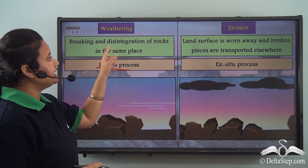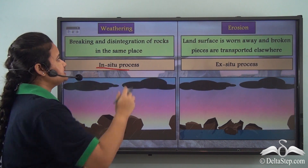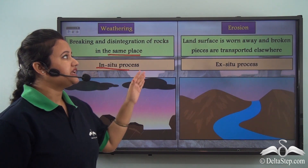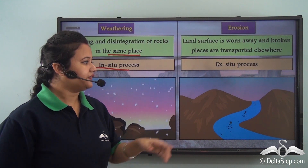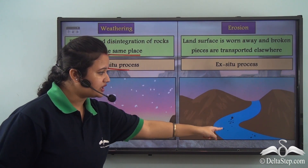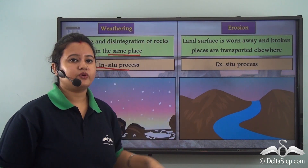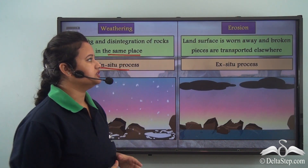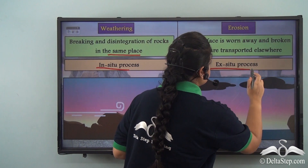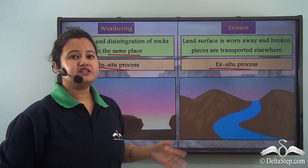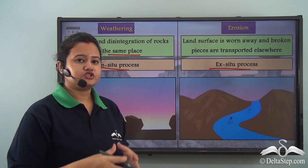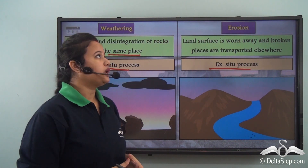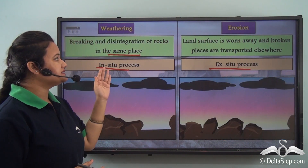In weathering, the breaking down of rocks takes place in the original place — in the same place. Whereas in the case of erosion, the broken pieces are transported elsewhere by running water. Due to this reason, erosion is known as an ex-situ process — that is, the broken pieces change their original position. So erosion is an ex-situ process, whereas weathering is an in-situ process.